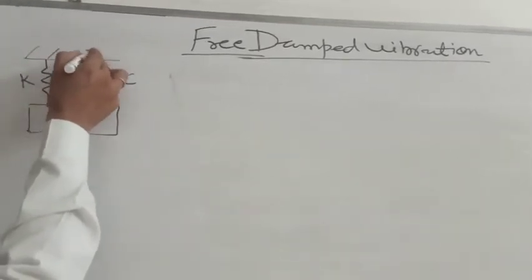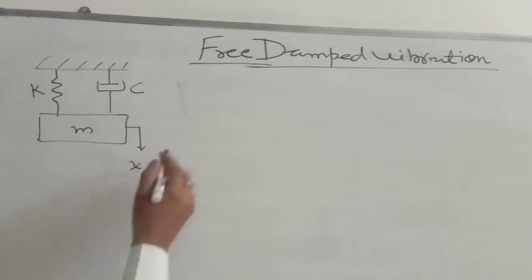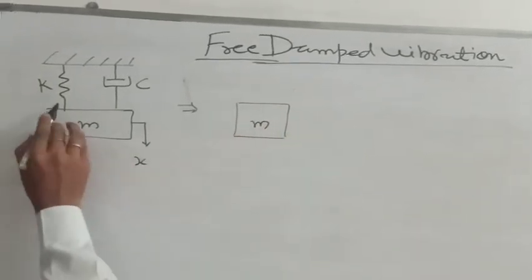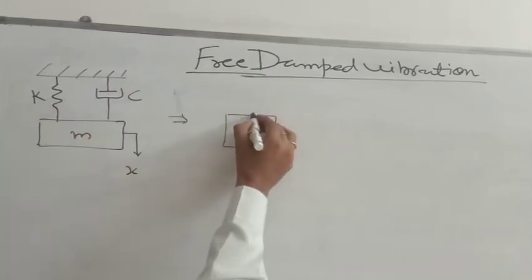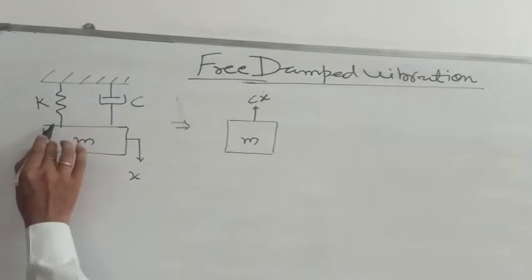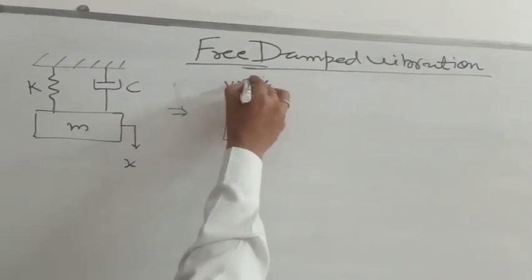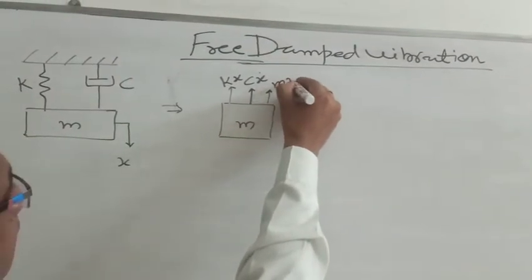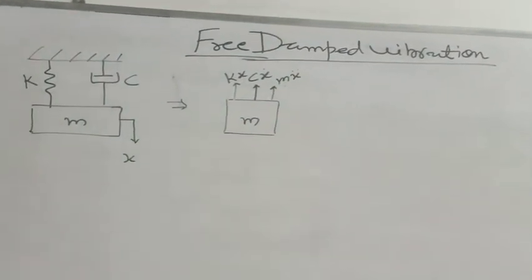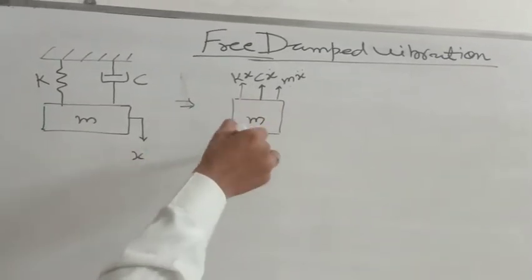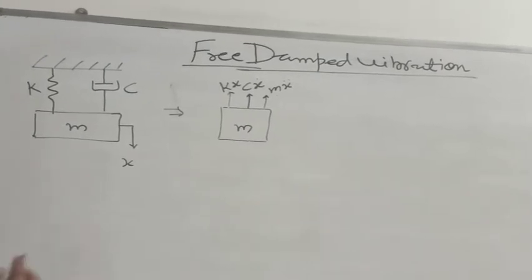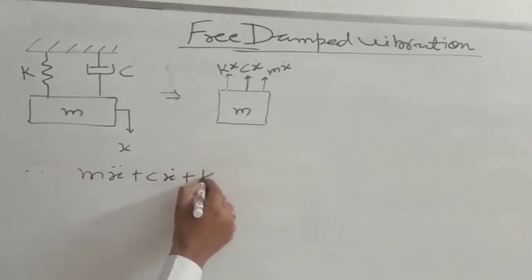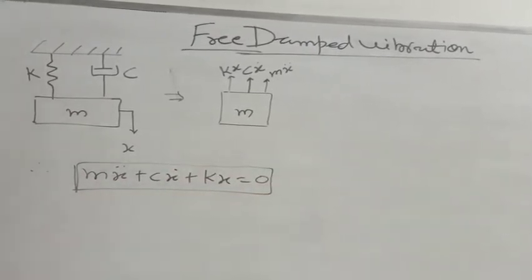If this is our system — this is K, this is C — and we are giving some external excitation, then according to D'Alembert's method, the damping resistance is C·ẋ, the spring resistance is Kx, and the inertia effect is in the opposite direction. This is our free body diagram. Applying the equilibrium equation (summation of vertical forces = 0), the equation of motion is: Mẍ + Cẋ + Kx = 0.